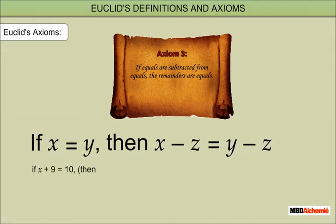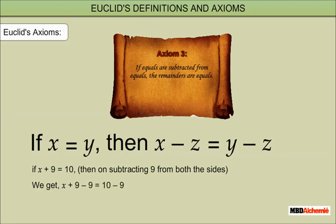Example: if x plus 9 is equal to 10, then on subtracting 9 from both sides, we get x plus 9 minus 9 is equal to 10 minus 9, which implies x is equal to 1.